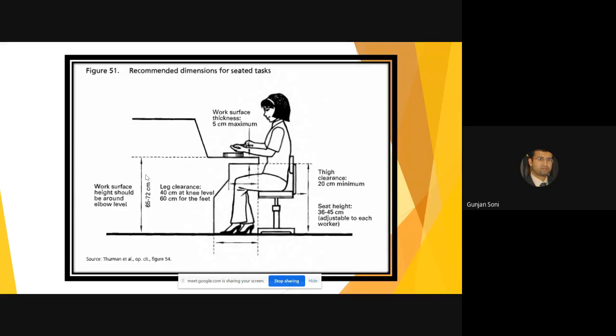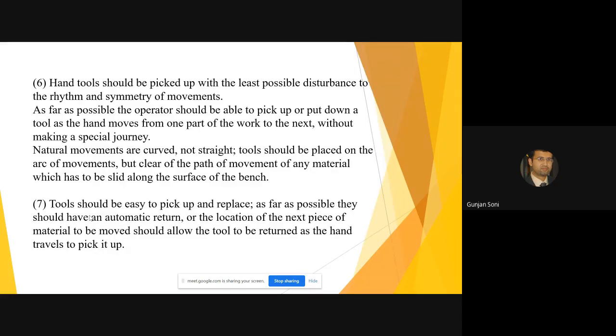Some dimensions of seating is also given. These are all standards which have been laid down by the average adult height. According to average adult height they have been designed. Like thickness of the work surface should be five centimeter. Clearance for the leg and the other parts, and the work surface height. You can also see that your tables are generally of this height only, 65 to 72 centimeter.